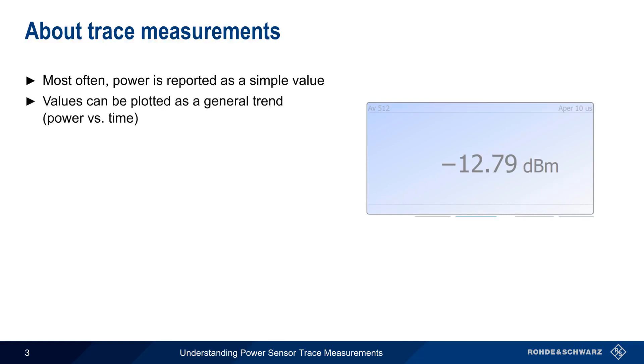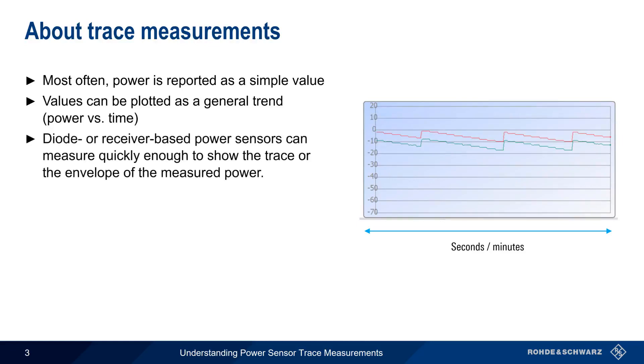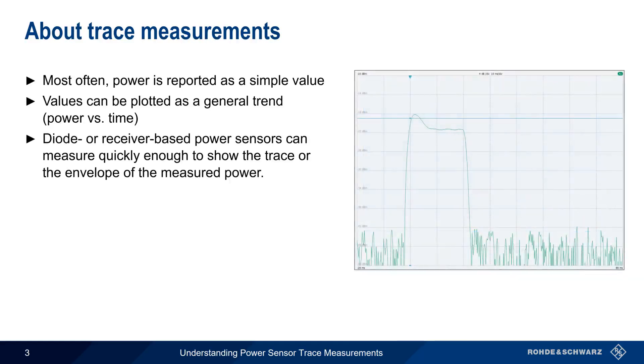We can also plot these power values versus time to get a general trend, with our time axis being on the order of seconds or even minutes. Again, all power sensors can do this. But certain types of diode-based or receiver-based power sensors can measure power quickly enough to also plot or trace the measured power. This allows us to see fine details of the measured signal over time, also called a signal envelope.